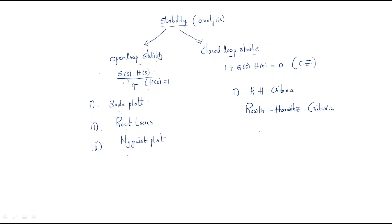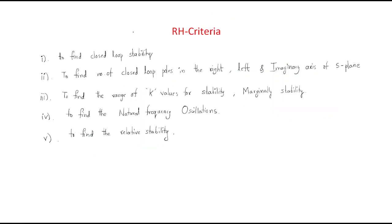Routh-Hurwitz criteria is named after the scientist who invented this method. This scientist found out how to determine closed loop stability. In this session we will first discuss closed loop stability and then go to open loop stability. The RH criteria uses the characteristic equation 1 + G(S)·H(S) = 0.